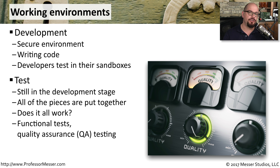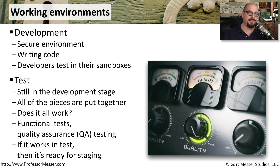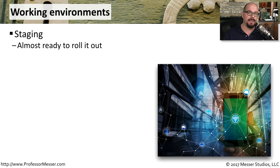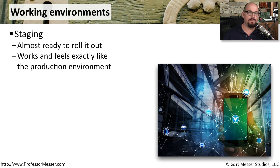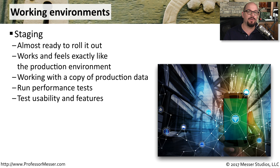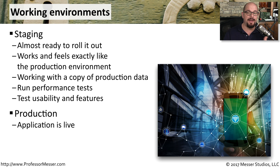This is usually the environment that Quality Assurance uses to test the system and make sure there are no bugs. And if everything works in this testing environment, we can stage all of that code and prepare it for production. The staging environment is one step away from production. This is where everything works and feels exactly as it would in a production environment. You would usually be working with a copy of the same data used in production, and this allows you to run performance tests and make sure everything is running with the same usability that's expected. Once we've run the application in the staging environment, we're ready for production — we can make the application live and roll out all of these updates to the user community.